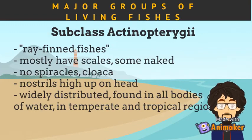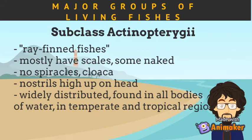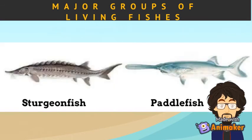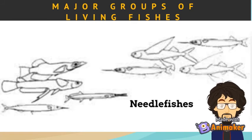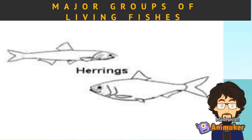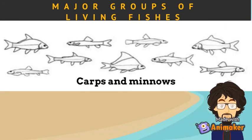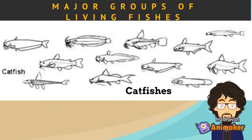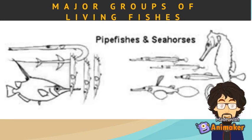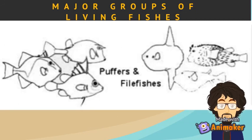Subclass Actinopterygiae is the group of ray-finned fishes. Most species have scales, while some are naked. They do not have spiracles, cloaca, or claspers. The nostrils are high up on the head. They are widely distributed, found in all bodies of water in temperate and tropical regions. This subclass includes sturgeon fishes, paddlefishes, eels and morays, needlefishes, sardines and herrings, carps and minnows, perch-like fishes, smelts, catfishes, pipefishes, seahorses, puffer fishes, and filefishes.